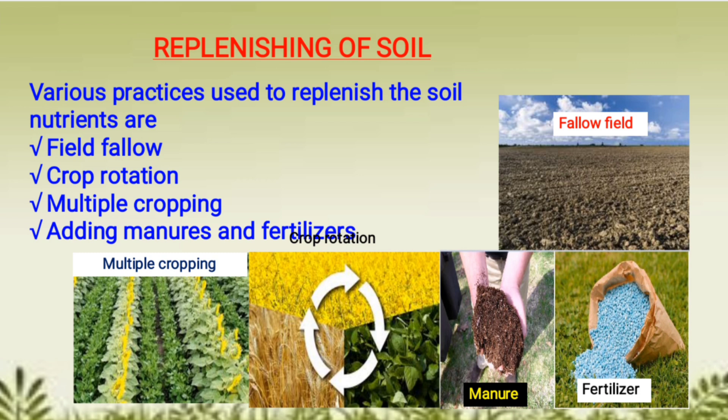The third practice is multiple cropping — in the same field we can grow two or more types of crops having different nutrient requirements. In this way, the yield of the crops will be good and the soil does not become deficient in different nutrients. Another practice is by adding manure and fertilizers to the crop field.